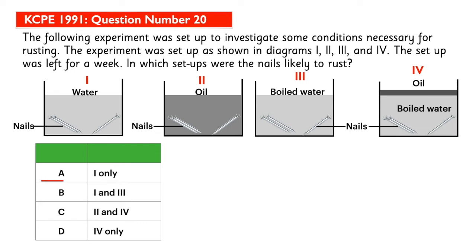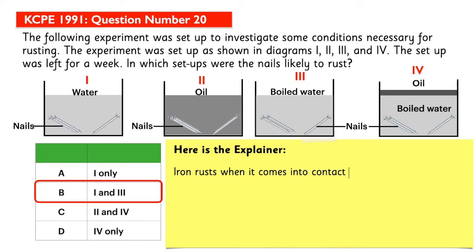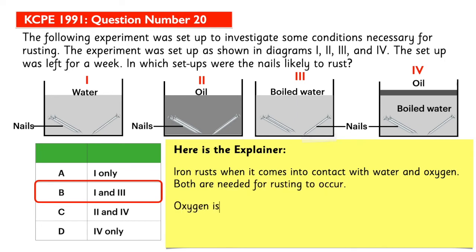The answer is B. Iron nails in set ups 1 and 3 are likely to rust. Here is the explainer: iron rusts when it comes into contact with water and oxygen — both are needed for rusting to occur. In set ups 1 and 3, both water and oxygen are present. The water in set up 3 was boiled to remove the oxygen; however,